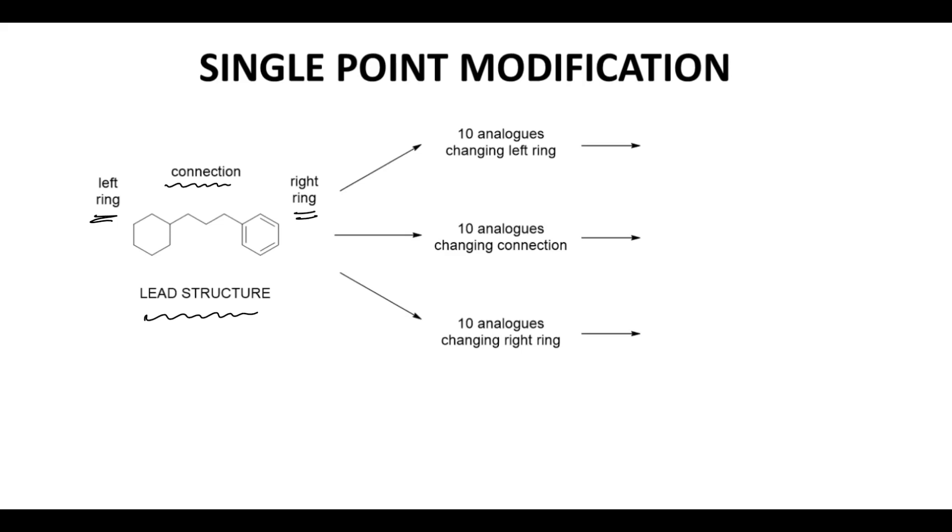Let's assume we wanted to make 10 modifications to each of these three parts. That is, we want to make 10 changes to the ring on the left. Changes might include add a chlorine, put in a nitrogen, etc.